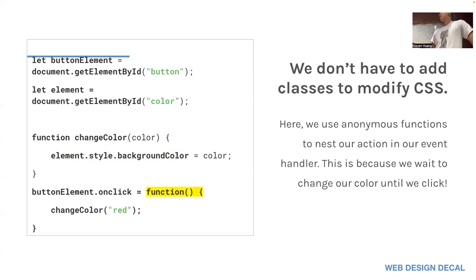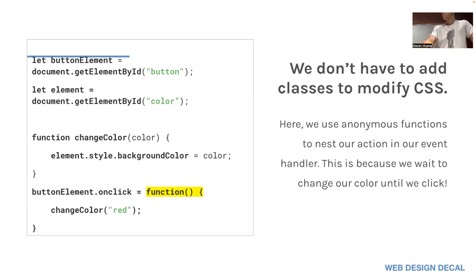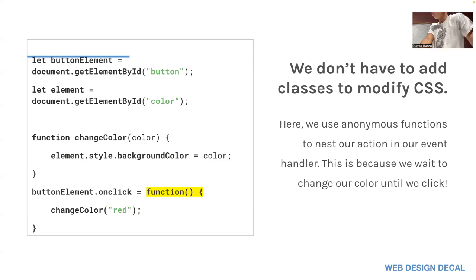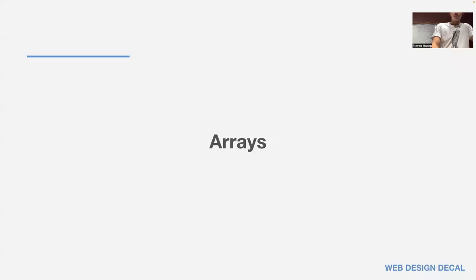Sometimes we want a function that has parameters but we don't want to call it right away, so we put it in an anonymous function — we write 'function' and within those brackets put 'changeColor' inside it. That way it doesn't get called when JavaScript runs through it, but gets called whenever something is clicked.